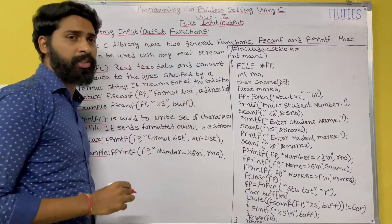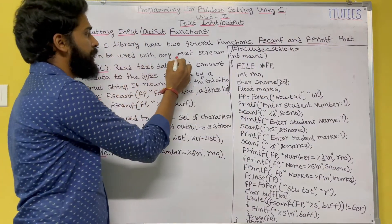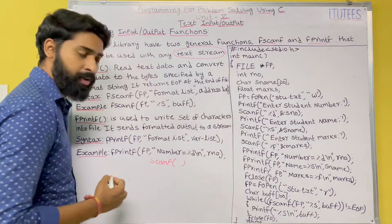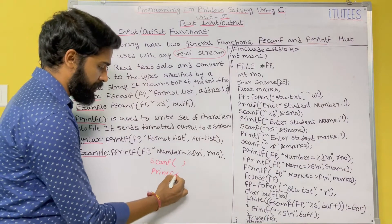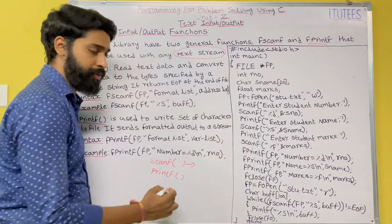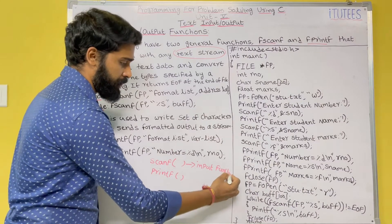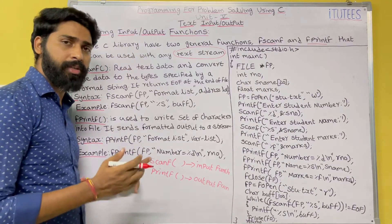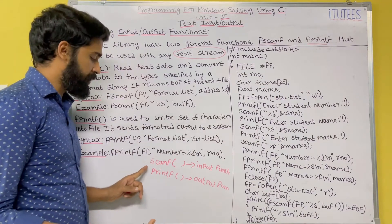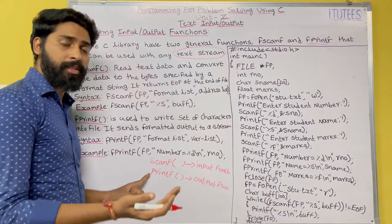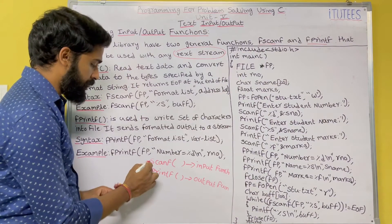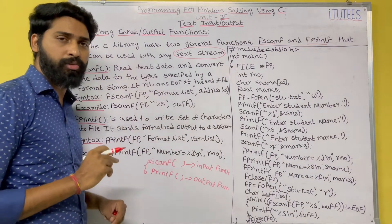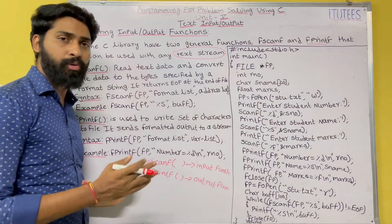The C library has two general functions, fscanf and fprintf, that can be used with any text file. In previous classes we learned about scanf and printf. Scanf is an input function used to read values from the terminal, that is the keyboard. Printf is an output function used to send output to the terminal, that is the monitor. Similarly, fscanf and fprintf are used to read and send data to files, not to terminals.